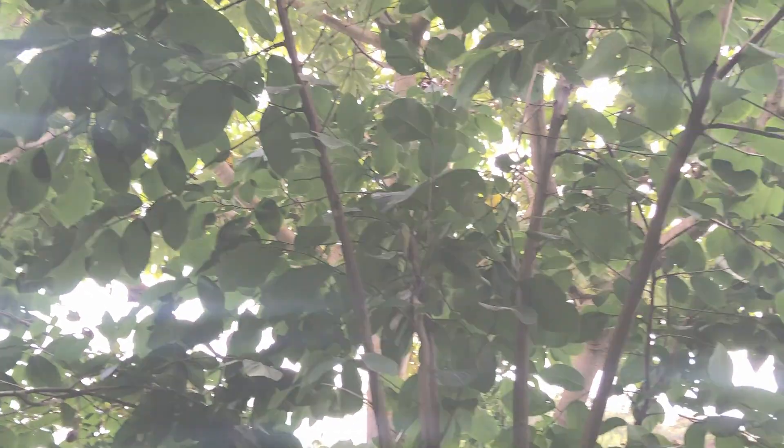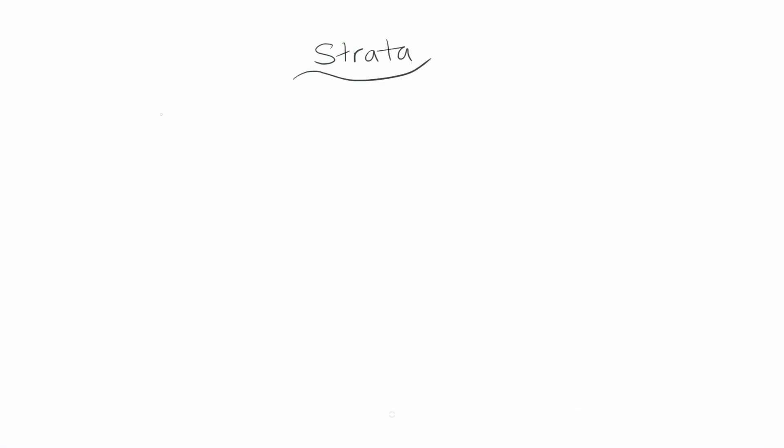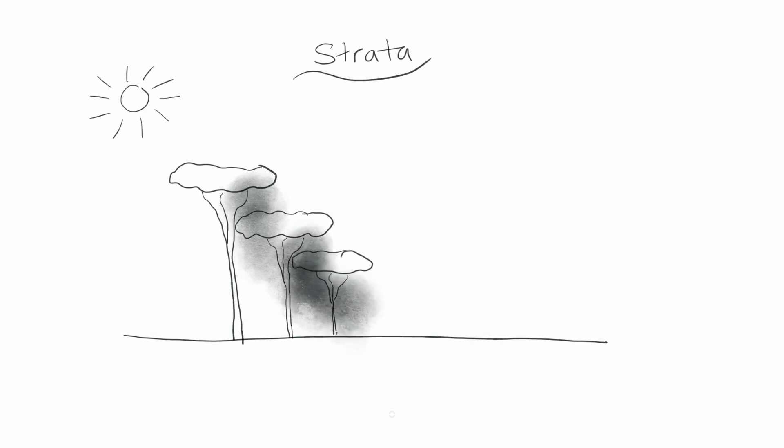So the first principle, strata. Strata is capturing as much sun as you can before it hits the ground. And we do that by understanding the different canopy layers that a plant occupies. And these canopy layers aren't so much to do with the height of the plant but the degree of sunlight that they require at maturity. Our first layer is the emergent canopy. Then we have high, medium and low. Again, not only referring to height.